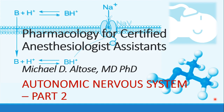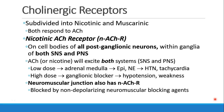Hi, this is Michael Altos. We are continuing our discussion of the autonomic nervous system, and this is recording part two. Now we're going to focus more on the cholinergic receptors, that is the parasympathetic nervous system.